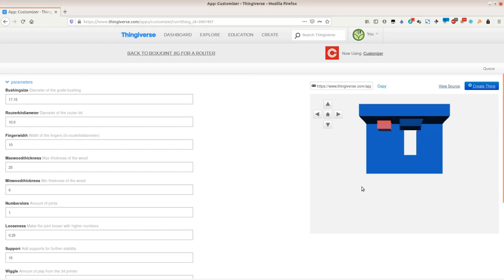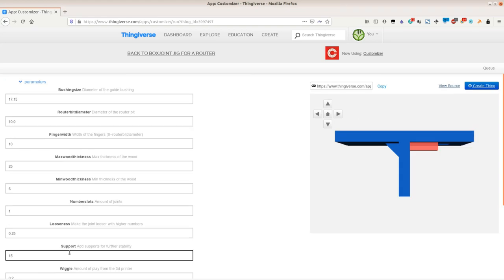If we set the support value to anything above zero the jig gets supporting triangles on the backside that increase the stability.